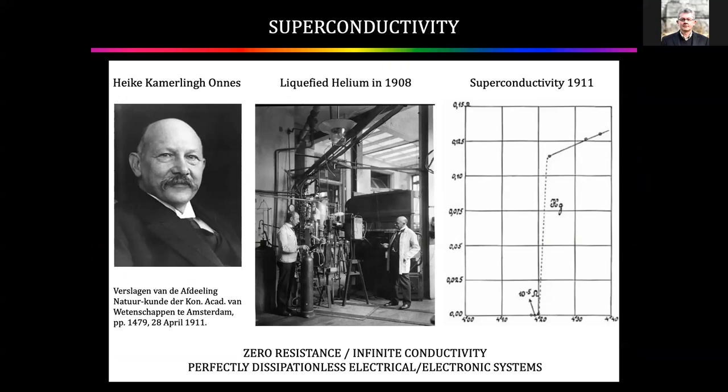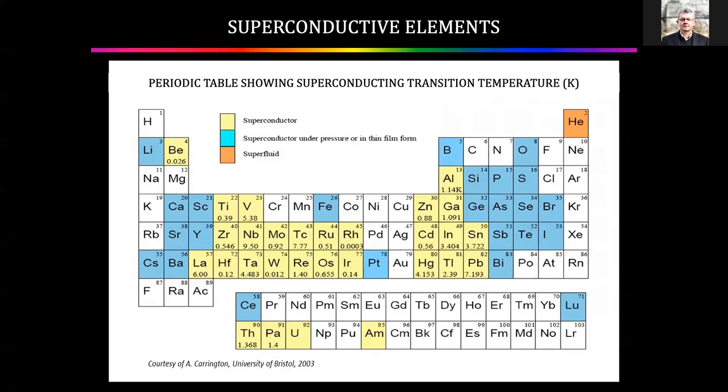Cameron Onnes discovered superconductivity in 1911, and the world of physics has not been the same since. It's one of the most important discoveries in the history of physics. He found that metals undergo a transition to zero resistance, or infinite electrical conductivity, and now we understand they have perfectly dissipationless electrical and electronic characteristics. At lower temperatures, virtually all elemental materials in the universe which are conductors become superconductors. It is the ground state of electronic matter.